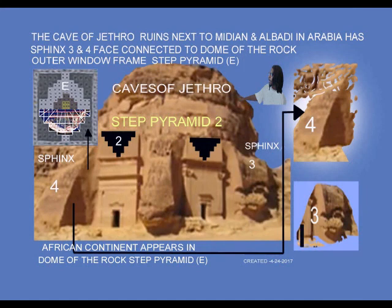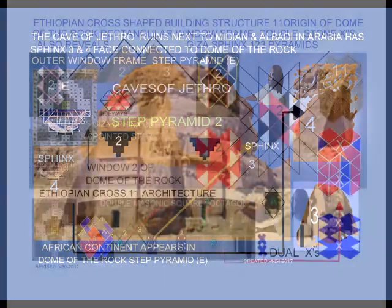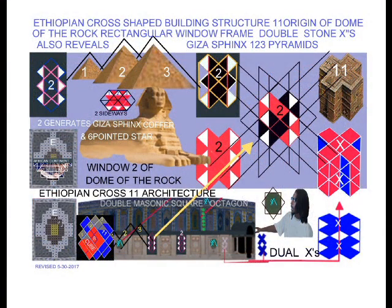As we look at the Dome of the Rock octagonal building structure, it has four doors with canopies over them. Next to each canopy on the outer wall surface, we see a stone rectangular window frame that has dual stone X's, one above the other.